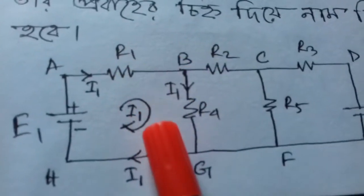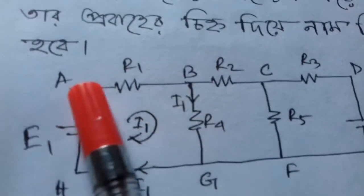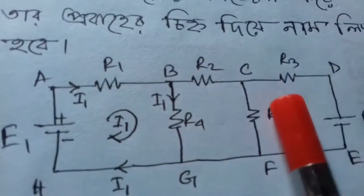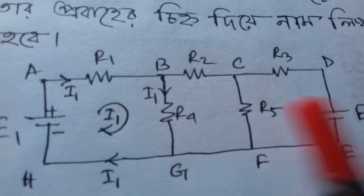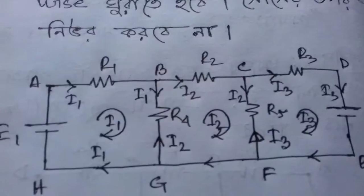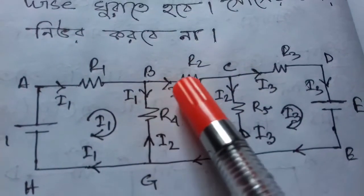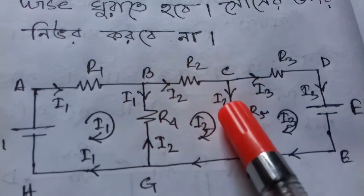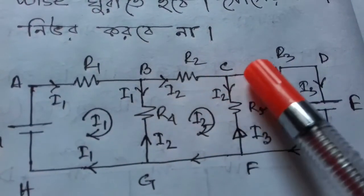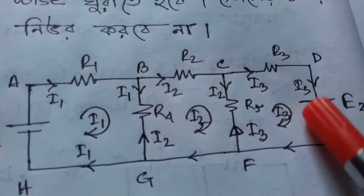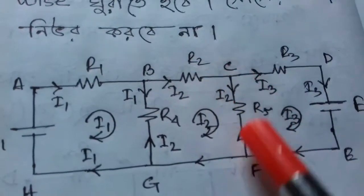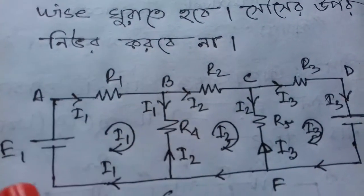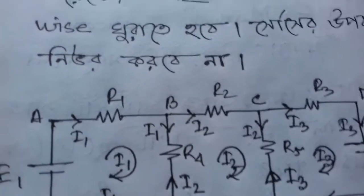The first loop current is i2, and the other loop current is i3. We have always used i1, i2, i3. This is the common approach — it is not the same as a single one.